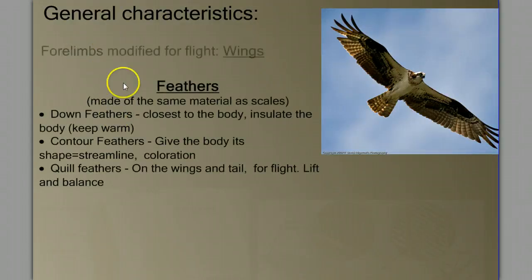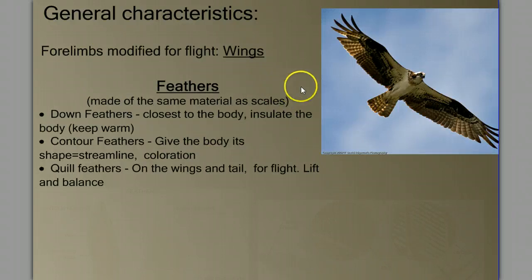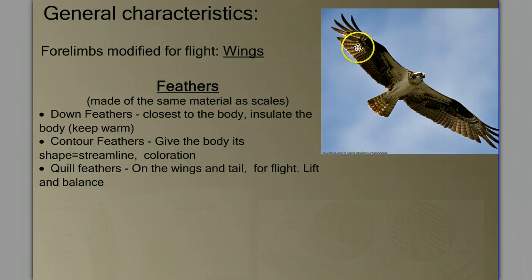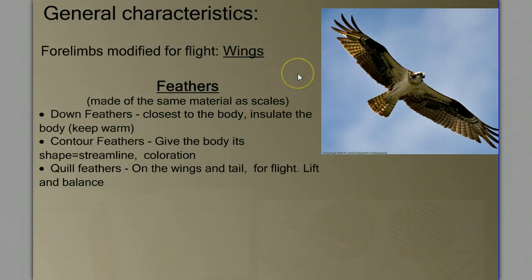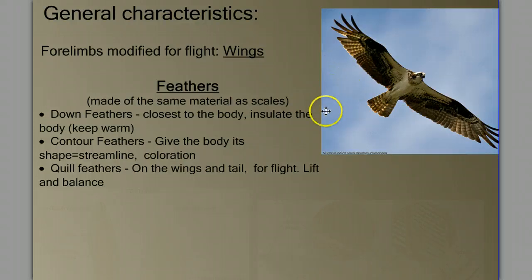Interestingly, the feathers are made of the same materials that make the scales in reptiles. It's the suggestion that feathers are just modified scales, that over time and evolution, feathers evolved from scales. They're derivatives of the skin, just like scales are. They're overlapping in nature and help prevent water loss, so they are very scale-like in that way.